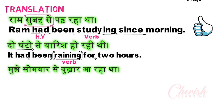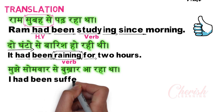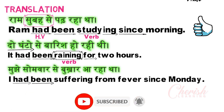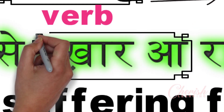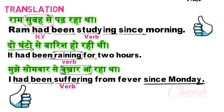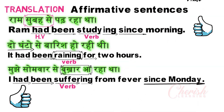One more example: 'I had been suffering from fever since Monday.' I/he/she — all use 'had.' Then 'been.' Then 'suffering from fever' — when we say I am suffering from fever, or I am down with fever, 'suffering' is the verb, so we add 'ing.' Suffering from fever, and when? Monday — that's why 'since' is used for a specific time. I hope this is clear.